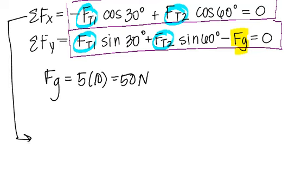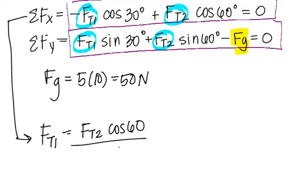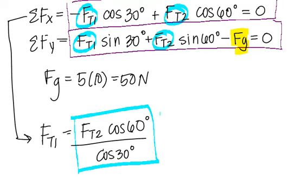So I'm going to scoot down just a little bit, and I'm going to rearrange for FT1. So FT1 is equal to FT2 cosine 60 if I divide by the cosine of 30. Now we have an equation for FT1. It's this big blob right here. So let's take it and dump it back into this equation for FT1.